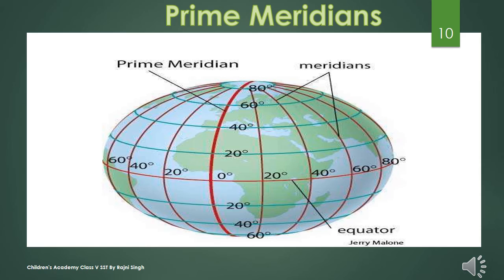The prime meridian divides our earth into two hemispheres — the eastern hemisphere and the western hemisphere — just as the equator divides our earth into the northern hemisphere and the southern hemisphere. A full circle of longitude is made up of 360 degrees, and the meridians are also drawn at intervals of 1 degree. There are 180 meridians east of the prime meridian and 180 meridians to the west, making a total of 360 meridians.